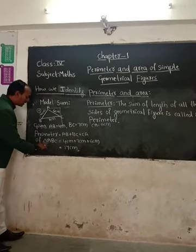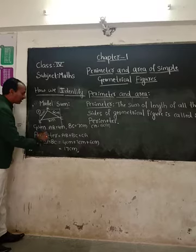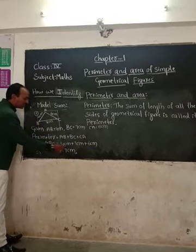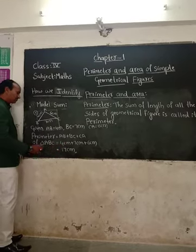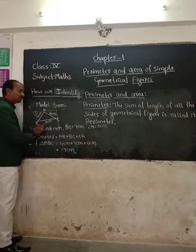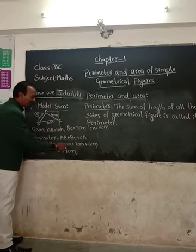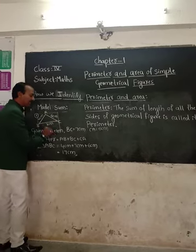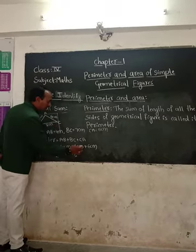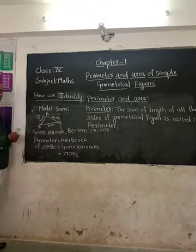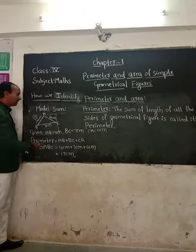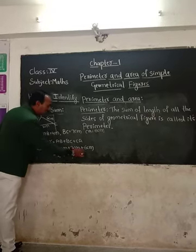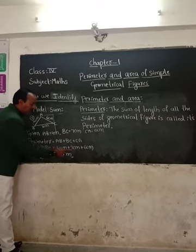For triangle ABC: AB is 4 cm, BC is 7 cm, and the third side CA is 6 cm. So the sum of these three sides is 4 cm + 7 cm + 6 cm. First, 4 plus 7 equals 11 cm.